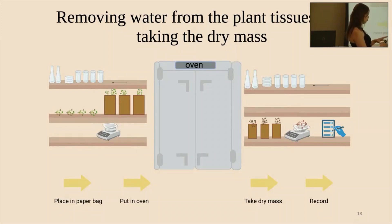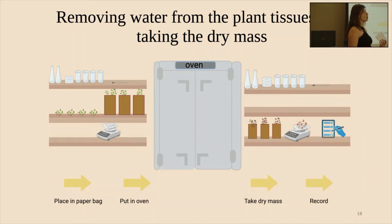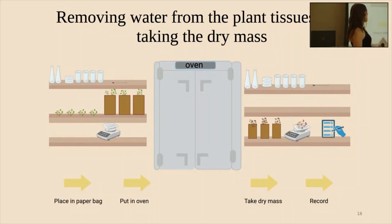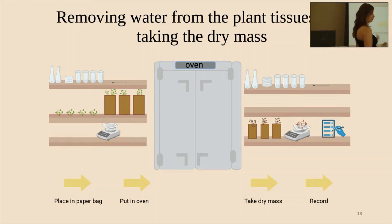After I took the wet mass, I was curious to know how the amount of water each plant absorbed would differ, because some plants absorb more water than others. So I wanted to level the playing field and just get the mass of the plant tissues themselves. I placed them in paper bags and put them in the oven for about two days at 60 degrees Celsius — that's 140 degrees Fahrenheit, courtesy of Google conversions — and then I reweighed them and recorded that dry mass.